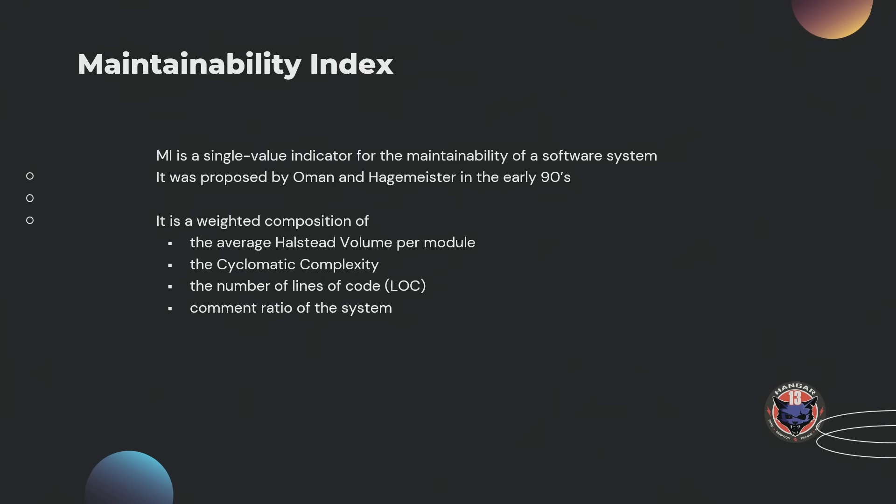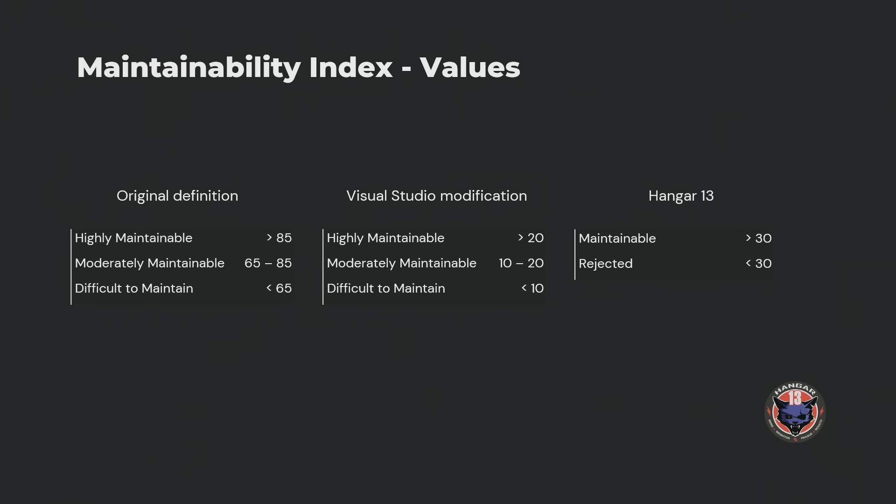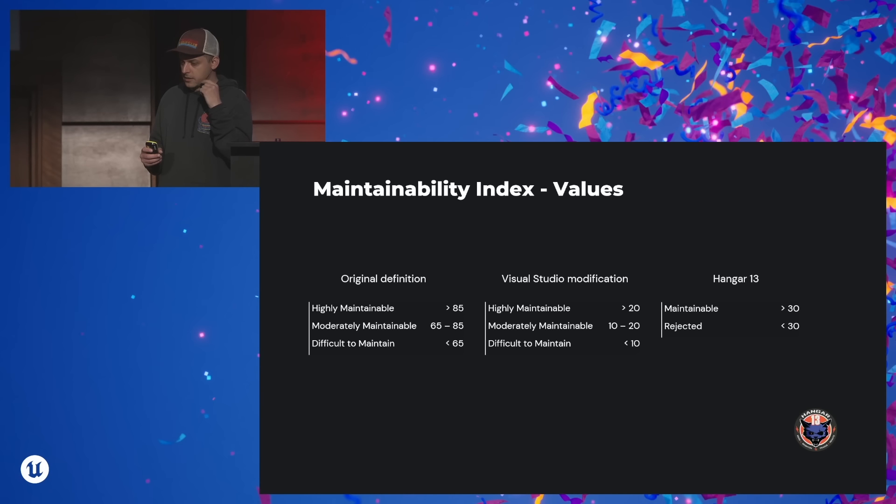The maintainability index is a weighted composition of the Halstead volume, the cyclomatic complexity, the number of lines of code, and interestingly, the number of comments. This is present in static analysis tools — Visual Studio uses it and they adapted the formula, normalizing it between 1 and 100, because the original formula is unbounded. The original formula said anything bigger than 85 is highly maintainable. Visual Studio compresses down to the 0–20 range. Whereas we, because it's a validator and we really just want to say spaghetti or no spaghetti, we just cut it straight — anything lower than 30 is not good for us. But you can obviously play with your data and understand what's best for you.